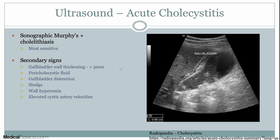When we think about imaging of acute cholecystitis, ultrasound is going to be the number one method we use. Now remember, acute cholecystitis, just like acute pancreatitis, is going to be a clinical diagnosis. But imaging will help push you in the direction of a positive acute cholecystitis or not. The most sensitive signs are going to be a sonographic Murphy's — essentially a clinical diagnosis confirmed with the ultrasound probe — and cholelithiasis.